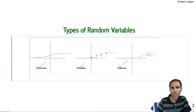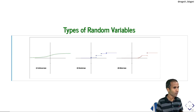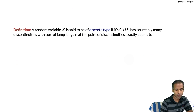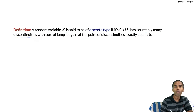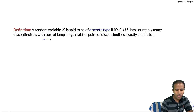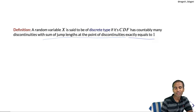Let me define what a discrete type random variable is. A random variable X is said to be of discrete type if its CDF has countably many discontinuities — that is, finite or countably infinite discontinuities — with the sum of jump lengths at points of discontinuity exactly equal to 1.